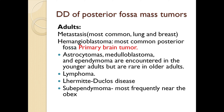Astrocytoma, medulloblastoma, and ependymoma are also seen in adults, but they are encountered in younger adults and rarely in older adults. Other differentials include lymphoma, Lhermitte-Duclos disease, and subependymoma, which is most frequently seen near the outlets. Thank you very much for listening.